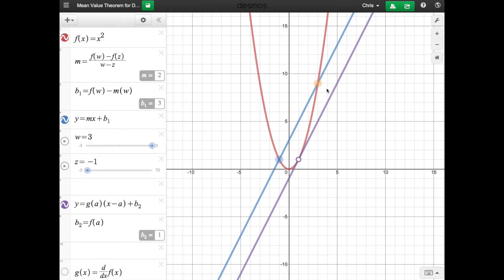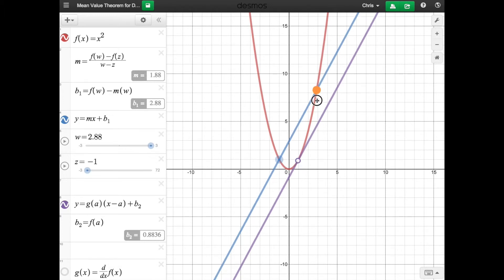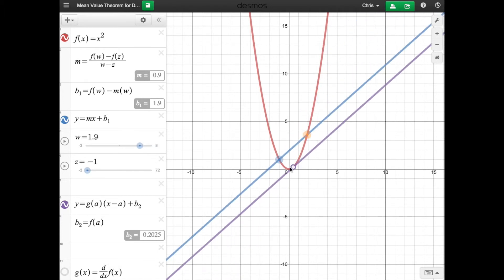From here you can experiment. If I move this right here, this secant line, you can see that the slope changes and this point also changes to find where it matches that same slope, where there's a tangent line that has the same slope as the secant line.